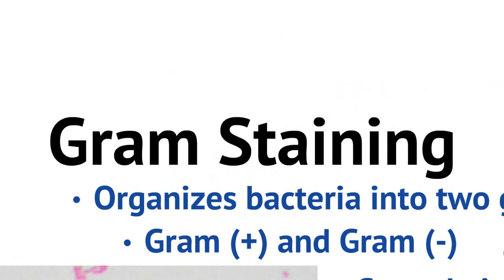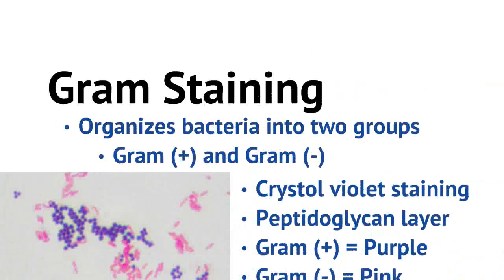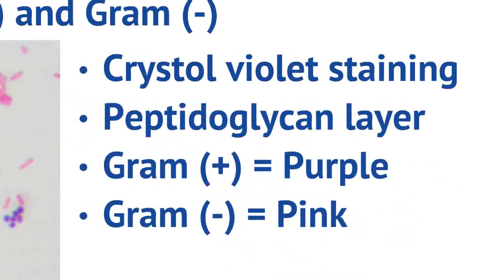Let's first start off with gram staining. Gram staining is a method that helps us organize bacteria into two groups: gram-positive bacteria and gram-negative bacteria. We use crystal violet staining to identify these two groups. Basically, there's a peptidoglycan layer on gram-positive bacteria on the outside of them. Crystal violet stains this layer purple, so gram-positive organisms will appear purple.